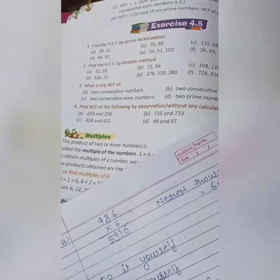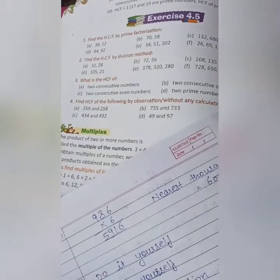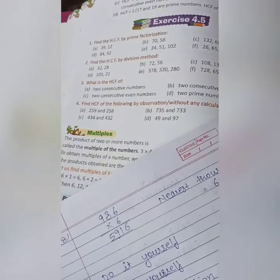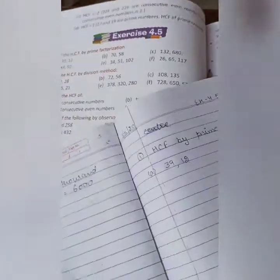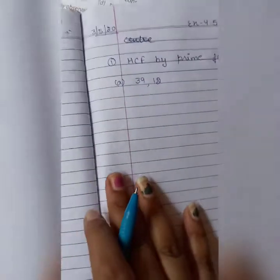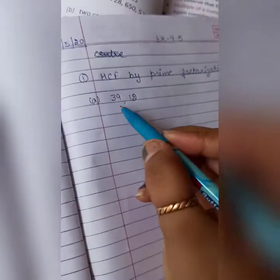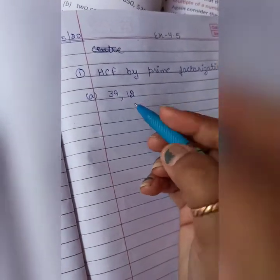Good morning class 5. Today we will do the solution of exercise 4.5. First question is find the HCF by prime factorization means you have to find the HCF by dividing the number with the prime numbers.